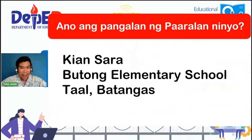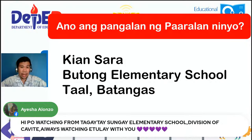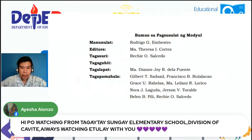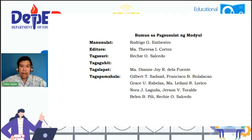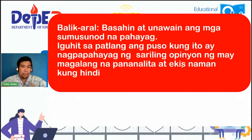Ano nga ba ang pangalan ng inyong paaralan? Kung nais ninyong mabanggit ang inyong pangalan at ang inyong mga paaralan, pwedeng i-type ninyo ang inyong pangalan at ang name ng inyong school, at saan nakalugar ang inyong paaralan. Halimbawa, ito ay Akian Sara Butong Elementary School sa Taal, Batangas. Batin muna natin na magandang hapon ang lahat ng ating mga kasama. Pasalamatan natin ang ADM sa pangunguna ni Ginuong Rodrigo M. Bestro at lahat ng recruitment team ng ating gagamiting module ngayong araw na ito. Kaya naman, magbalik-aral muna tayo.